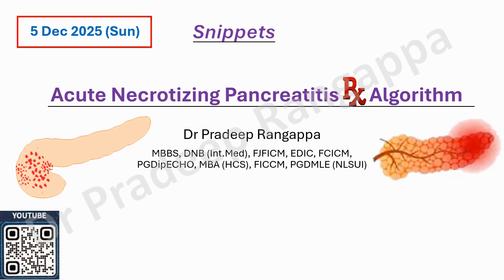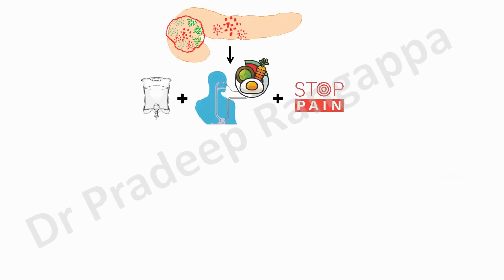I'll show you the algorithm — let's keep this in the back of our minds when working as a team to manage acute necrotizing pancreatitis. The key tenets of management would be supportive care, which includes fluids, good nutrition, and pain relief — all areas where intensivists are experts and provide optimal therapy.